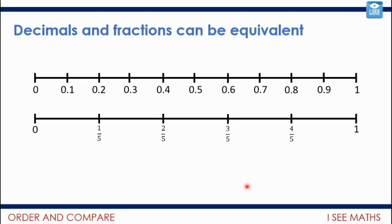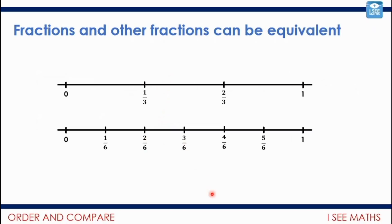But decimals and fractions can be equivalent. For example, I could say 'hello' or I could say 'bonjour' — I'm saying the same thing, just in two different languages. Similarly, 0.4 and 2 fifths are the same distance along this number line. They are the same — it's a different way of saying the same quantity. Fractions and other fractions can also be equivalent, meaning equal — the same. You can get fractions written in different ways that represent the same amount.